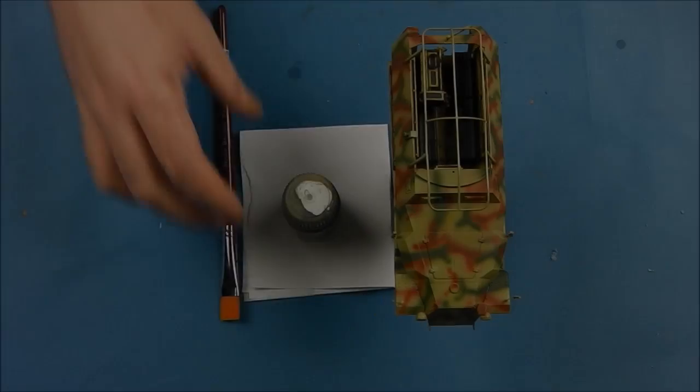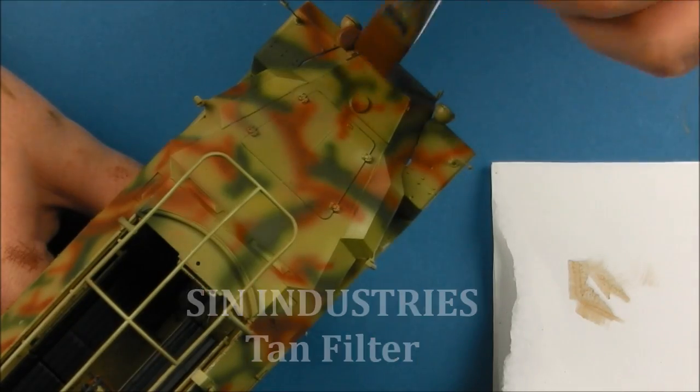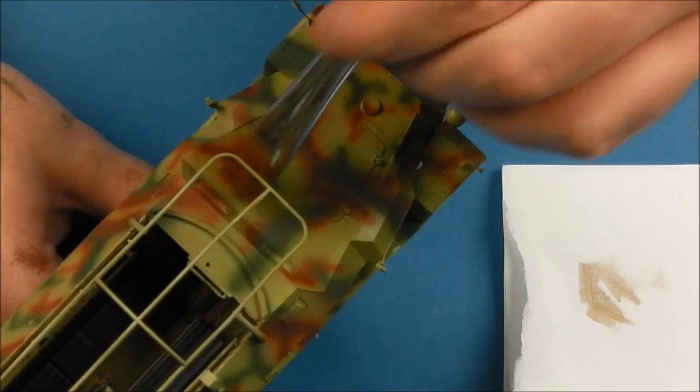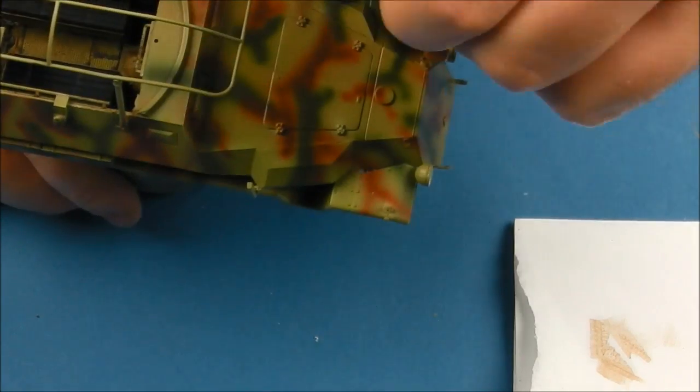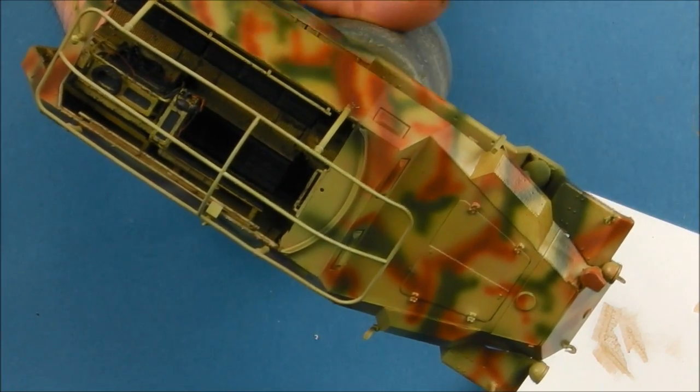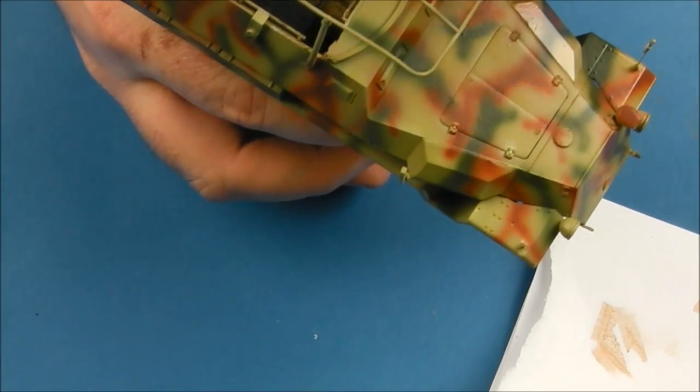With the camo touched up, we're going to add a filter from Sin Industries. I don't know if these are in production anymore, but it's like a tan filter. I'm just going to put a tiny amount onto my brush, wipe off the excess, and try to put down a very thin layer of this filter. I found that it did a really good job just blending all the colors together.